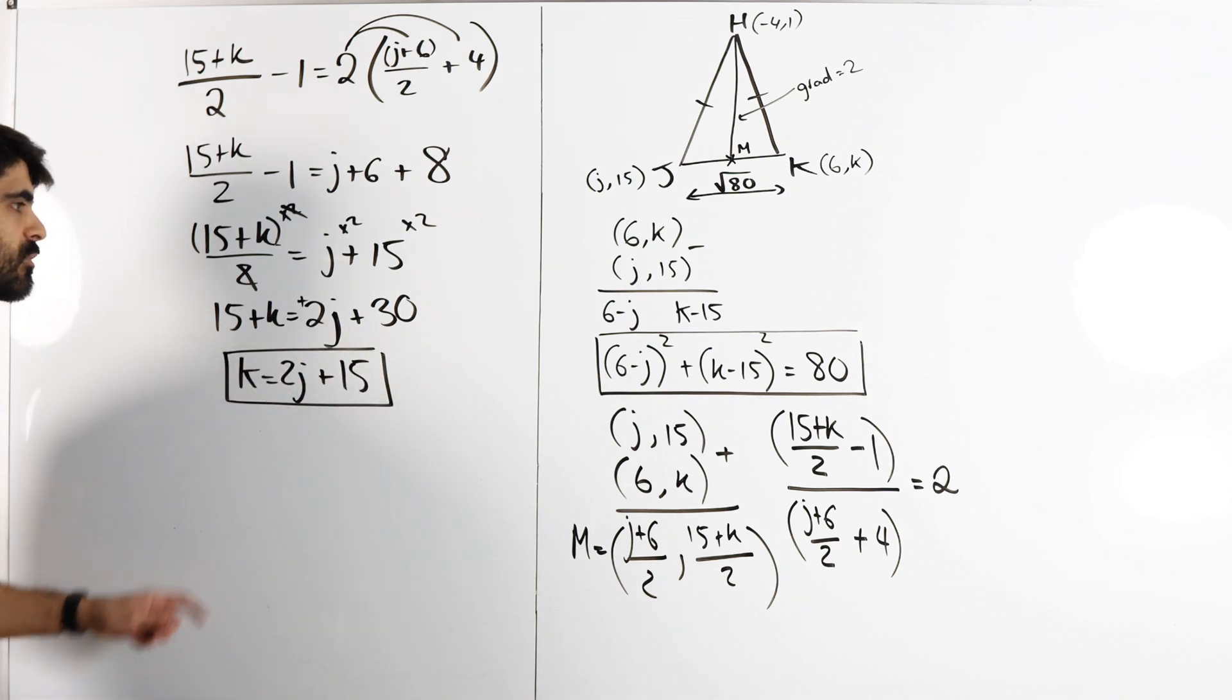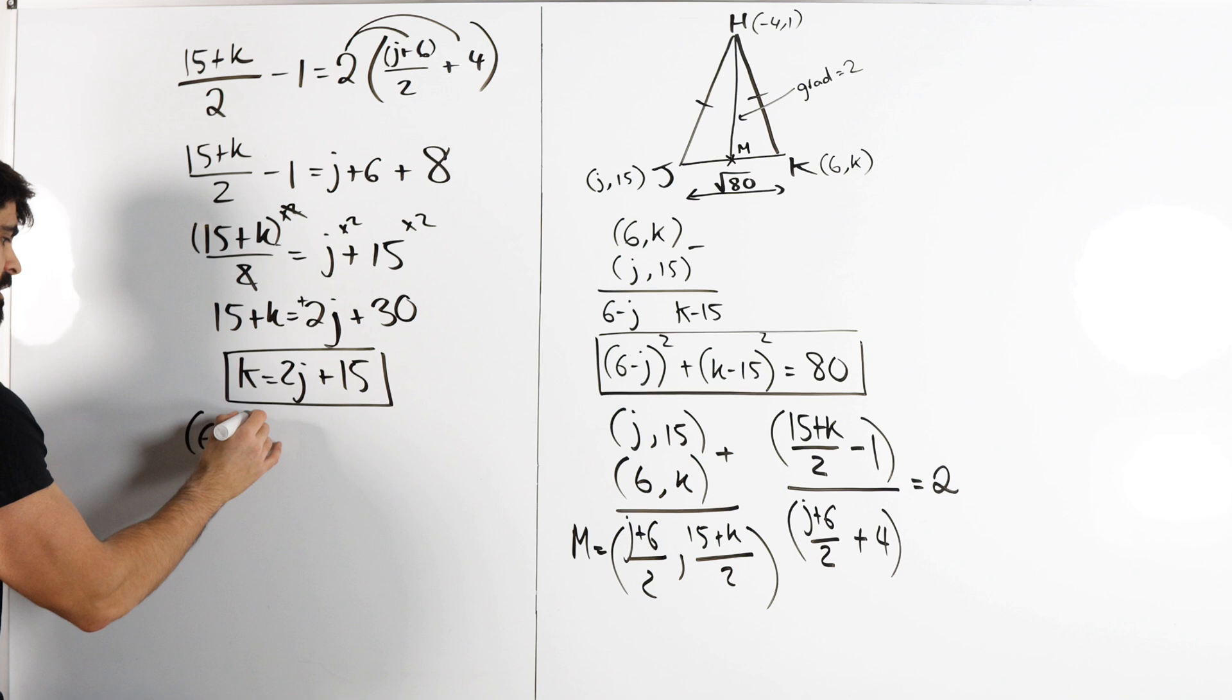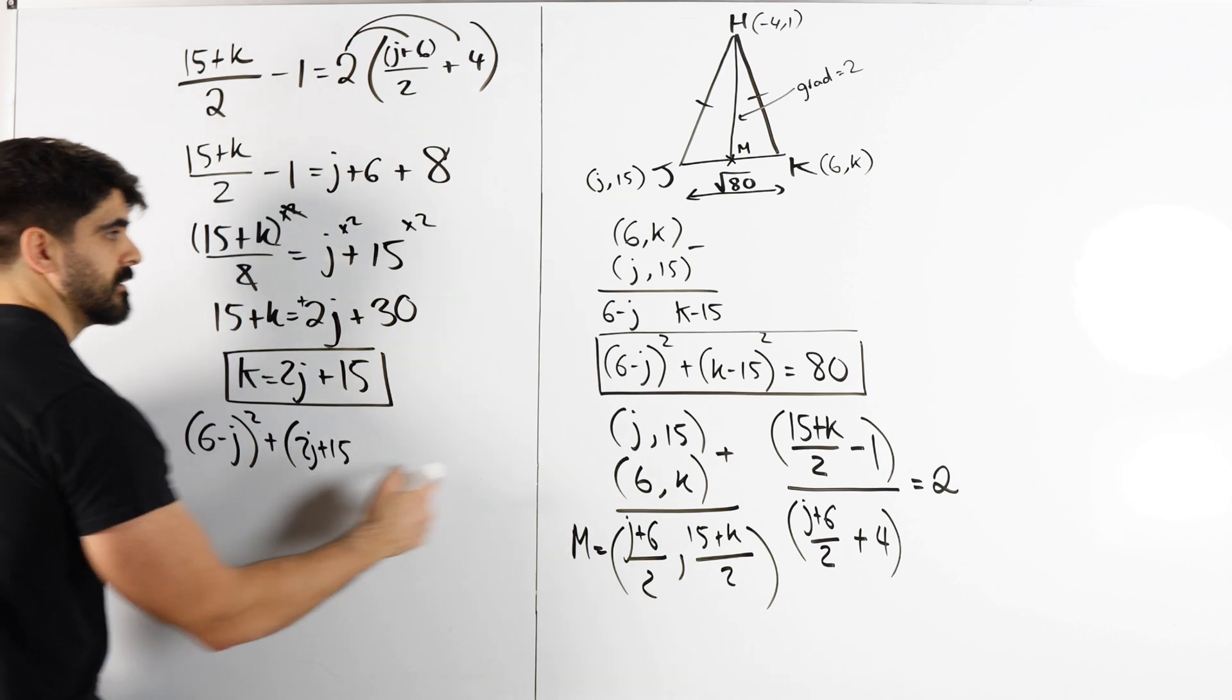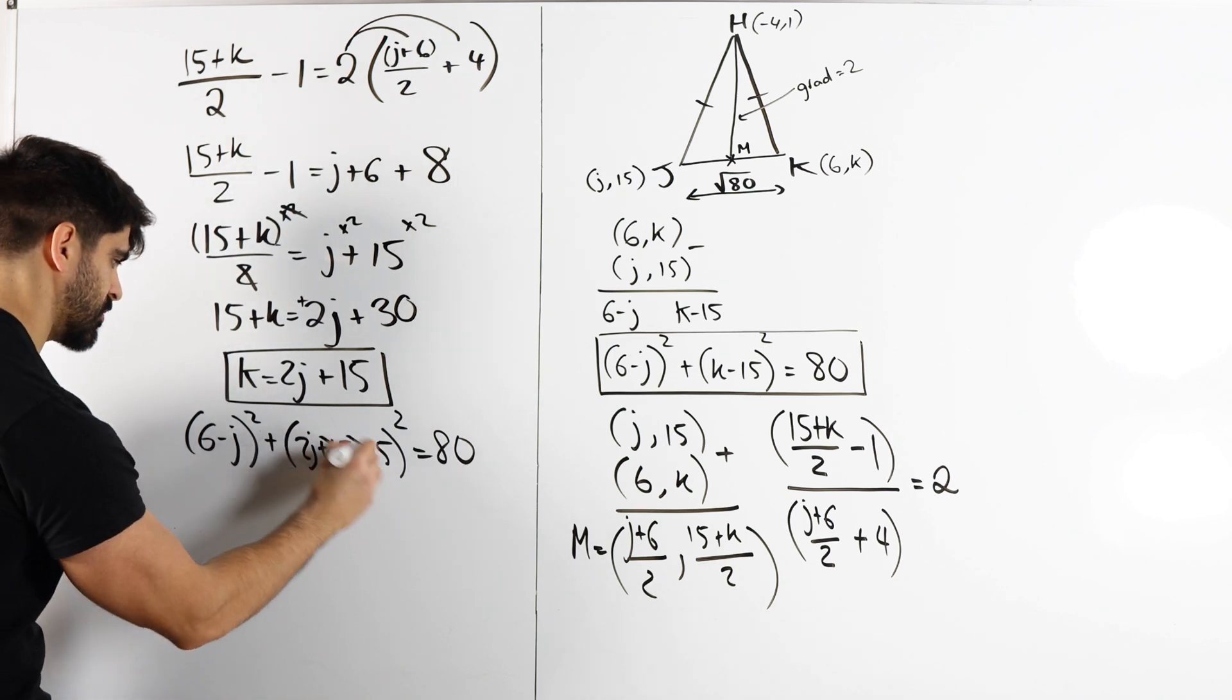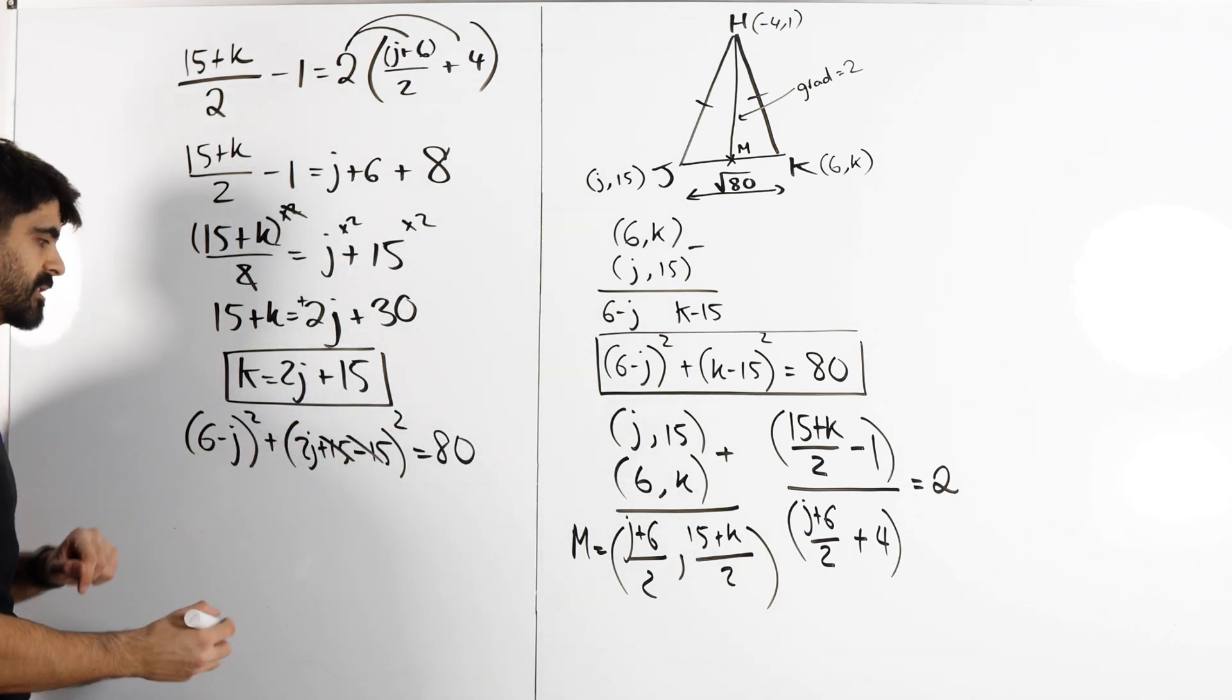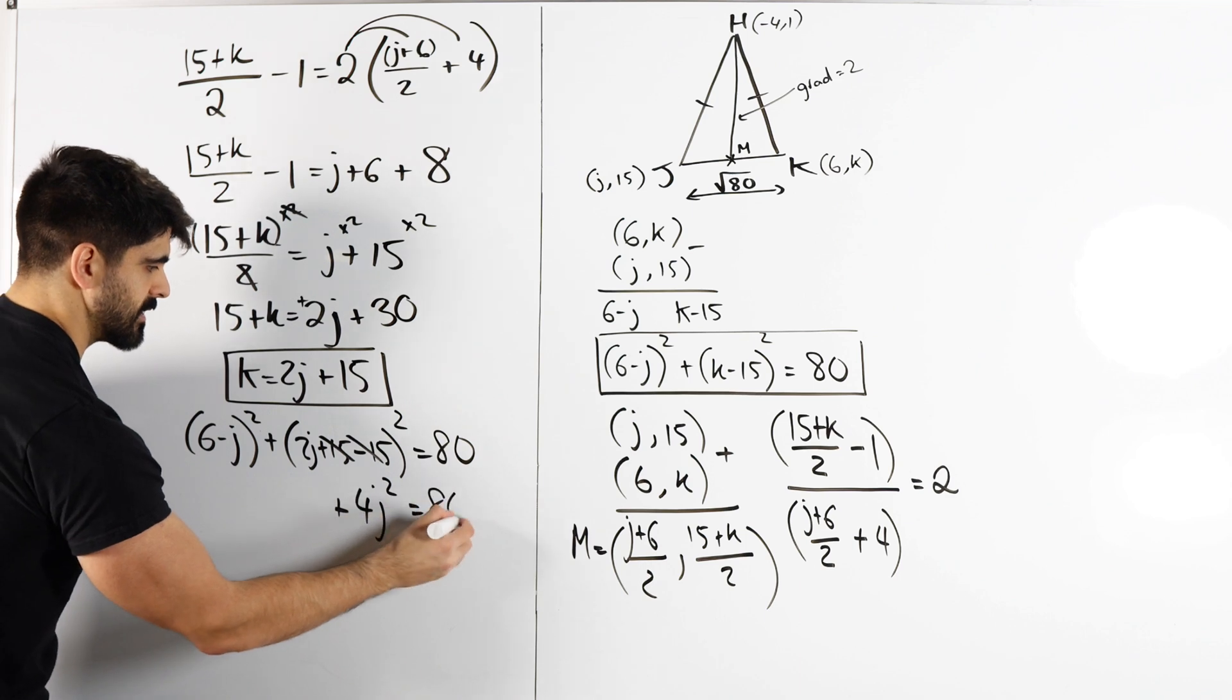Now let's do our simultaneous equation. That K, I'm going to sub in there. We're going to get (6-J)² plus, then we're subbing in K there, (2J+15-15)² is 80. That cancels. Then we're going to do (2J)². 2J squared, 2 squared is 4, then we have J² is 80.